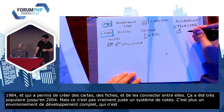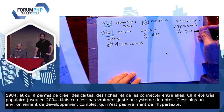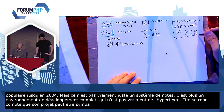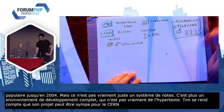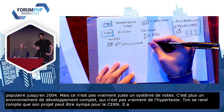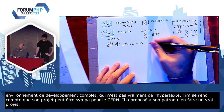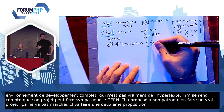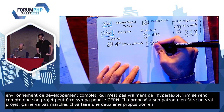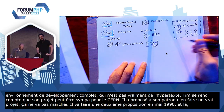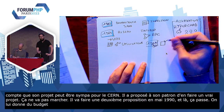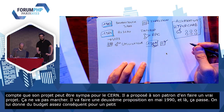Tim se rend compte que son petit projet peut être sympa pour le CERN. Donc, il va proposer à son patron d'en faire un vrai projet pour le CERN. Ça ne va pas marcher, il va refaire une deuxième proposition en mai 1990, et là, ça passe. On lui donne du budget, et un budget assez conséquent pour un petit projet comme ça, parce qu'on va même lui permettre de prendre un ordinateur NeXT.